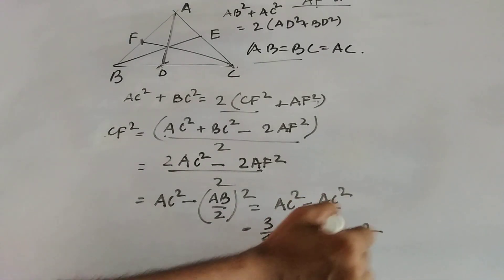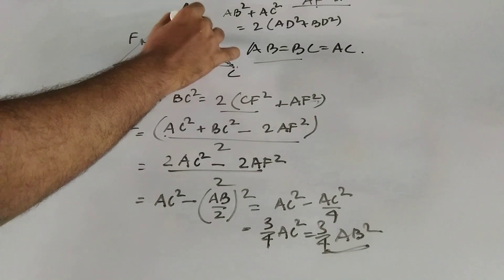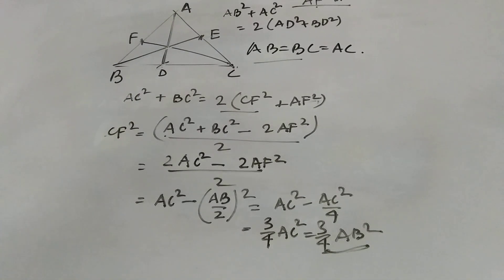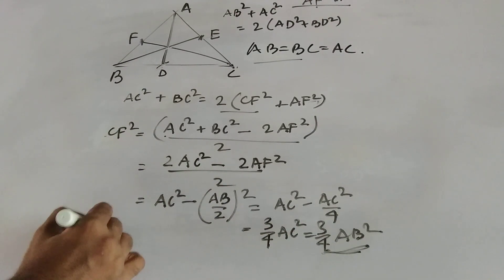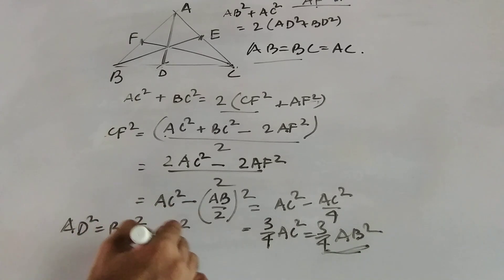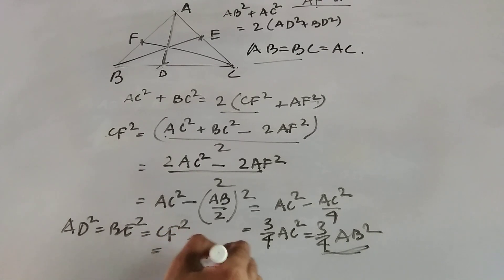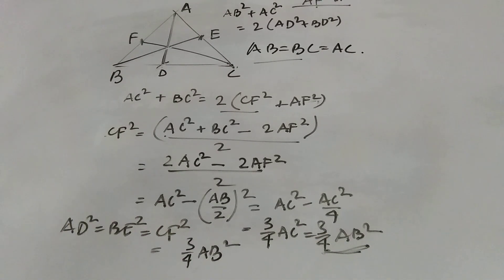So this one is the value of the median AD that we have already derived in the previous step. Similar way, I can prove that BE, that is the last median of this equilateral triangle, its square value will be also same as 3 by 4 AB square. Hence, AD square equal to BE square equal to CF square equal to 3 by 4 AB square, which obviously tells us that all the median values are equal in length.